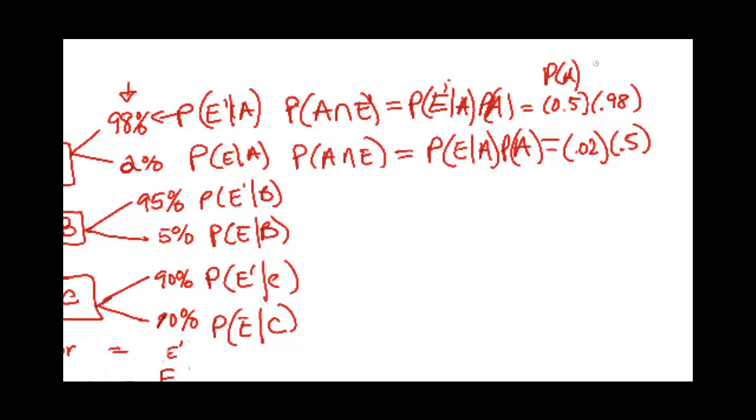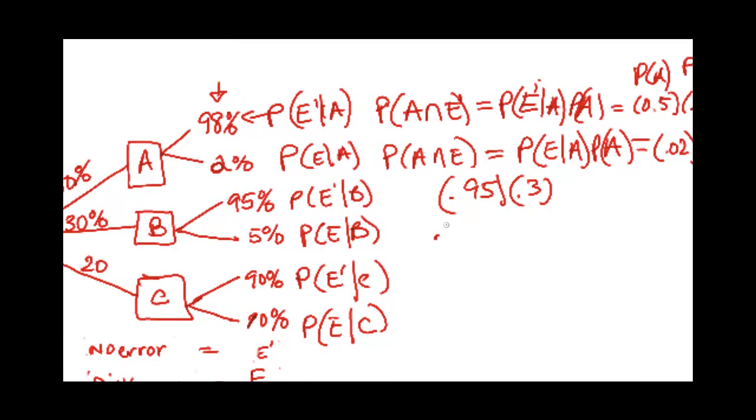And you can find the intersection of all of these doing what I'm doing here. So this one would be 0.95 times 0.3 and 0.05 times 0.3 and 0.2 times 0.9 and 0.2 times 0.1.